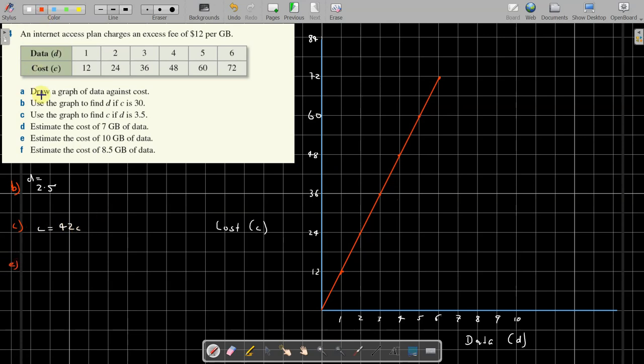Part e: estimate the cost of 7 gig. So data is seven. That's going to be, let's do a little bit of extending the graph up to seven. Yep, 84, 84 cents for 7 gig.